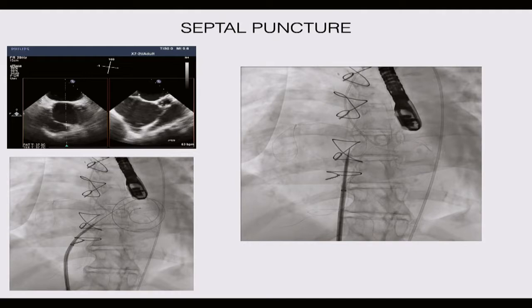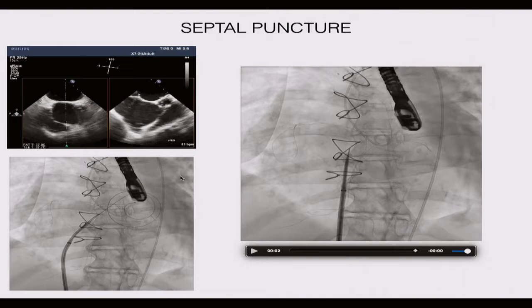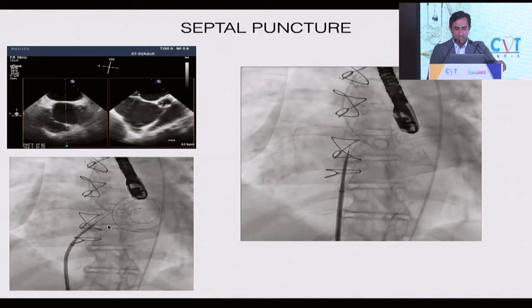Transeptal puncture is very important for TMVR valve-in-valve — it must be imaging-guided. There is a recent paper from Cleveland Clinic where they performed TMVR valve-in-valve minimally without TEE under fluoroscopy, but the key is the plane of the septal puncture must be visualized on TEE and fluoroscopy. On TEE we want to be right in the mid-septum, maybe slightly posterior.